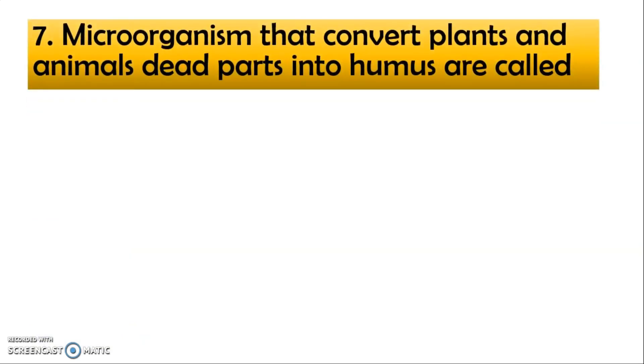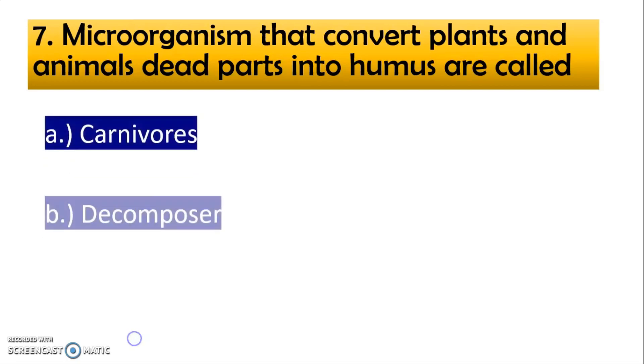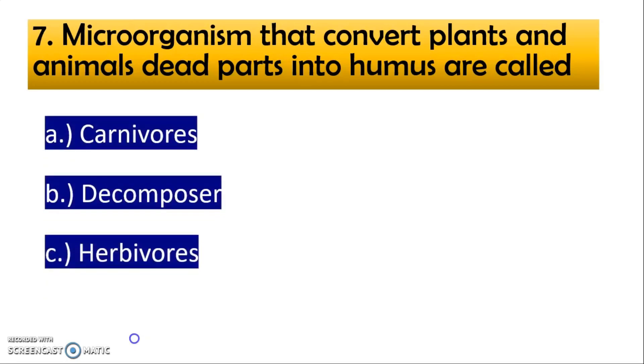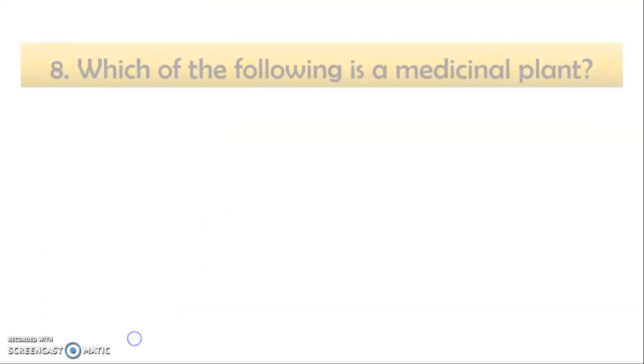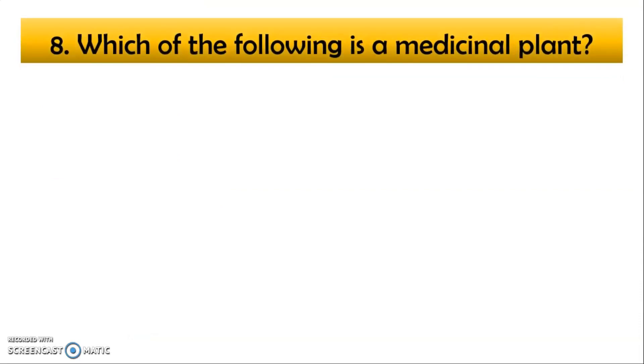Microorganism that converts plant and animal dead part into the humus are called. This is the repeated question, carnivorous, decomposers, herbivorous, producer. But these options are different. Okay, but the answer is same, decomposers. You don't have to be confused here. Okay, question can ask be in different ways but you have to be clear with your concepts.